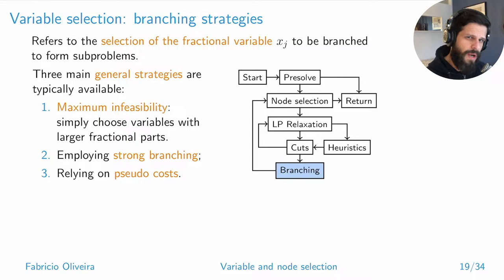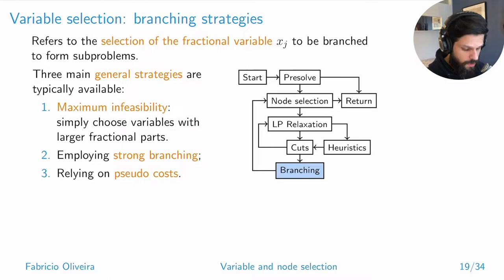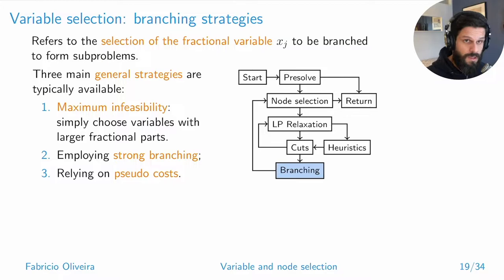There are three main strategies that can be combined. First, you can look at maximum feasibility: if you have a variable at 2.1 and a variable at 3.5, then 3.5 is more fractional than 2.1, so you pick that one. It's essentially about how far away the variable is from its ceiling or floor value.